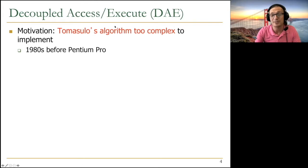Motivation was Tomasulo's algorithm is too complex to implement. This was 1980s before Pentium Pro. Nobody implemented it. People suggested that we don't want this much complexity in the systems. Actually, VLIW can be positioned in a similar way because VLIW clearly has a very different philosophy than out-of-order execution and Tomasulo's algorithm.